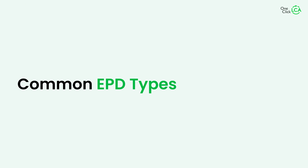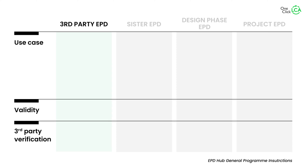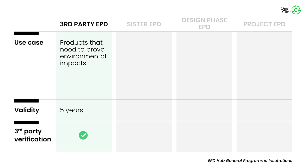The most common type of EPD is a standard third-party verified EPD — we call it a parent EPD. It is required by many regulations and certification schemes and accepted by almost all of them. This is valid for five years and requires one year of production data.